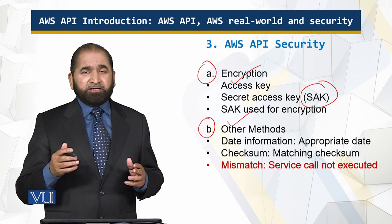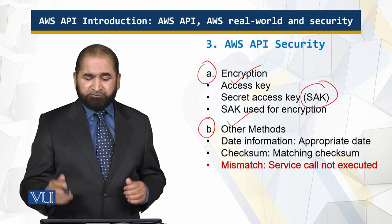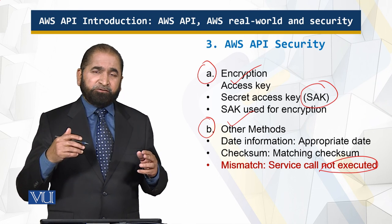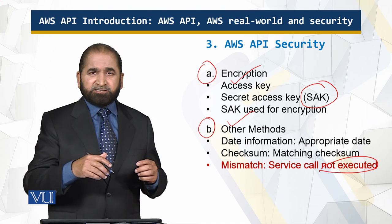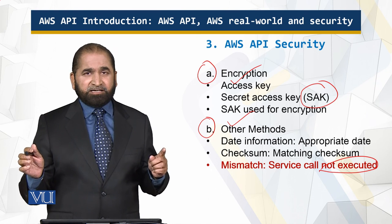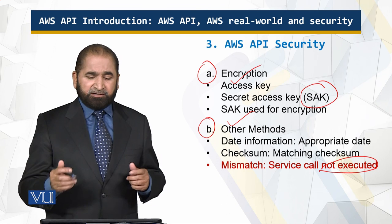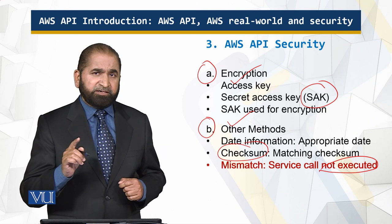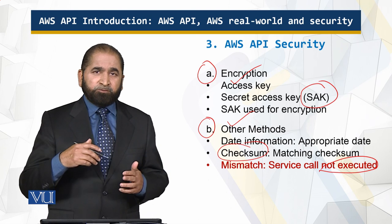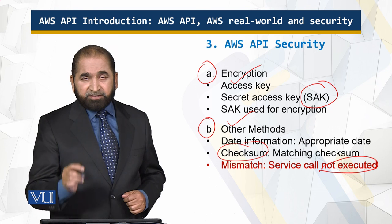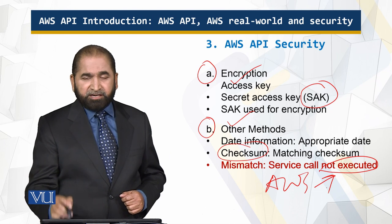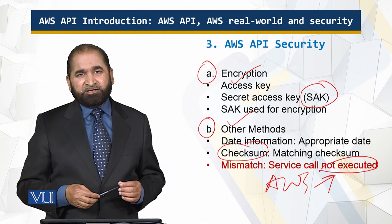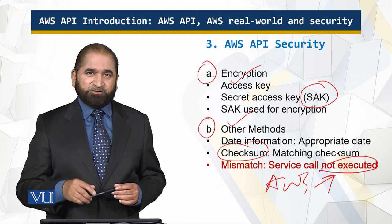The second security method involves other checks. There is a date associated with the service call — if the date is inappropriate, the call will not be executed. Also, if someone intercepts the message in transit and makes changes, the checksum will be different, and Amazon Web Services will not execute the call. So there are certain levels of security, and more details are given in the course notes for this module.